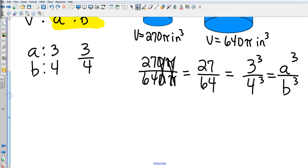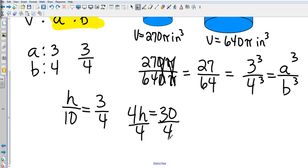That's going to help us find our height. We're going to go back to our original equation, and our height ratio is going to be h over 10. Our scale factor is 3/4, so when we cross multiply, that's going to give us 4h equals 30. Divide both sides by 4, and we end up with h equals 7.5 inches.